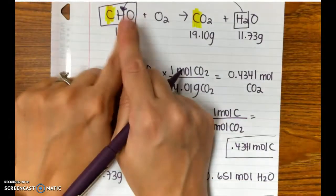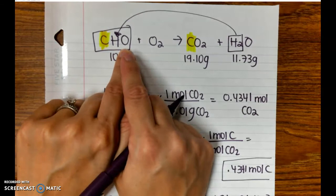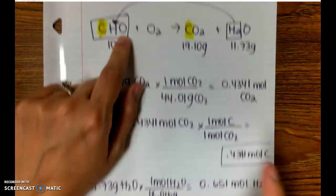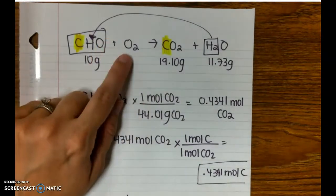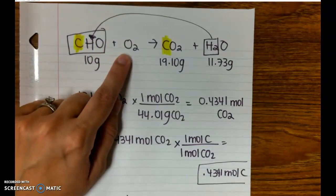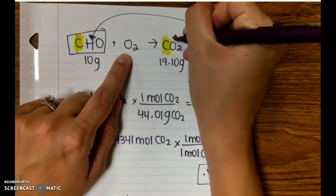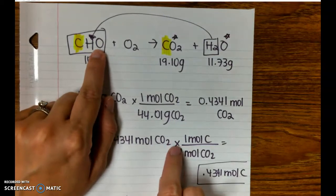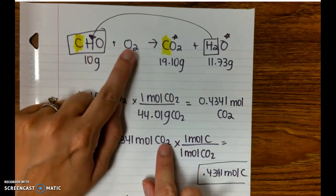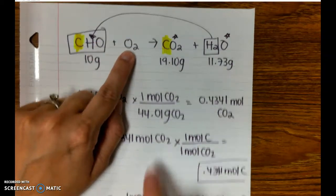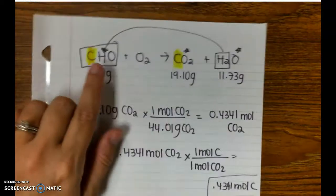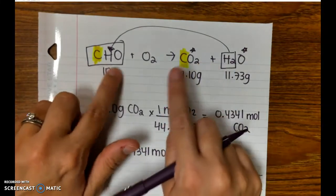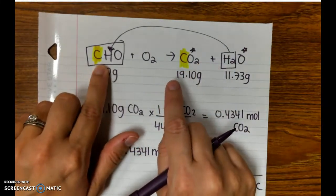Oxygen is the last thing we need to figure out this empirical formula. However, I can't do what I did here to solve for oxygen, because O2, like the air we breathe, was also a reactant. So some of this O and some of this O came from here, but some of it also came from here. So we can't just solve for moles of oxygen like we did carbon and hydrogen, because carbon and hydrogen only came from here.